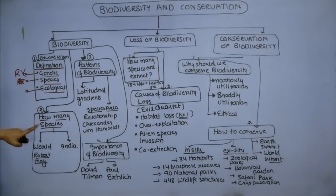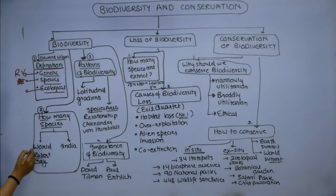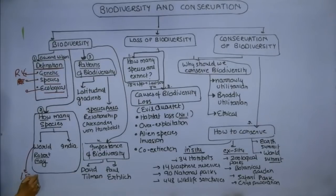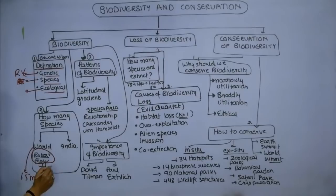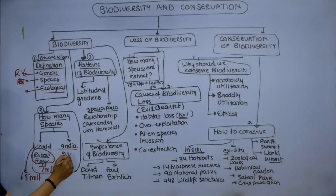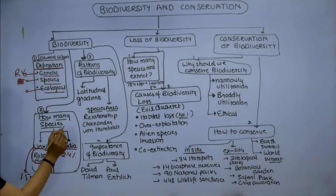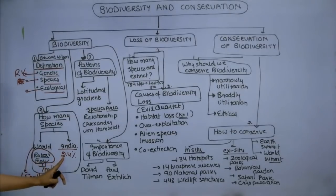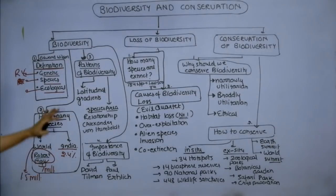How many species are in the world and in India? In the world, there are 1.5 million discovered species and 7 million estimated. In India, there is 2.4% of the world's land area but 8.1% of global biodiversity.